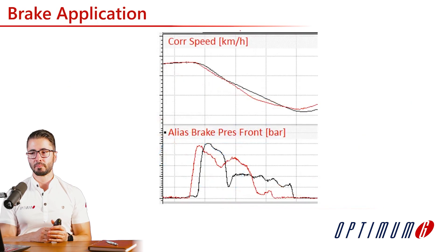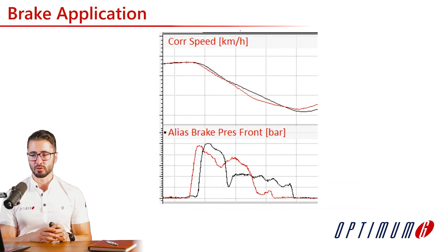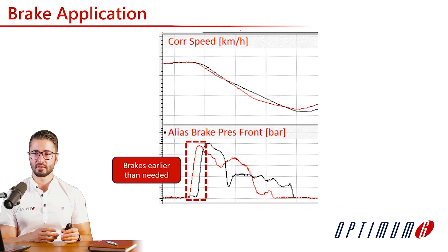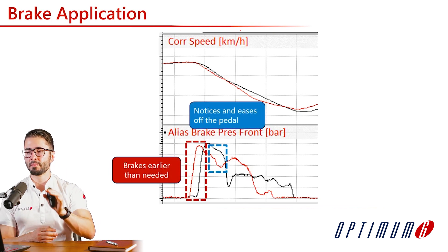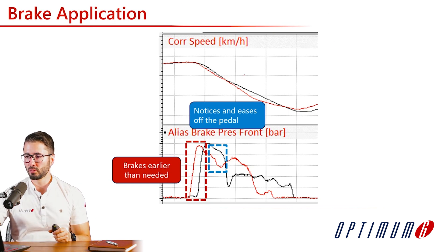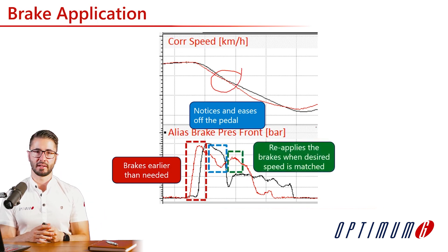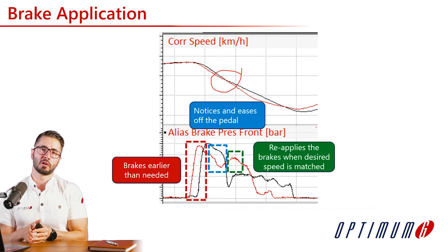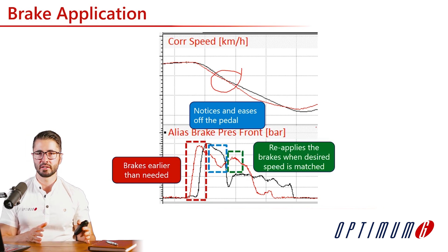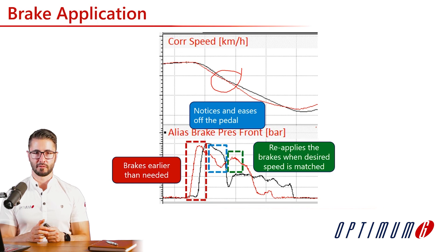In the next example, the comparison driver in red was braking a lot earlier. Interestingly, the driver realizes this, reduces brake pressure until the speed matches what the car would expect, and then goes back on the brakes — a real example of the double peak, indicating the driver was braking earlier than needed.